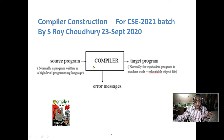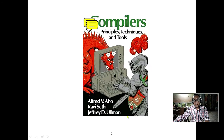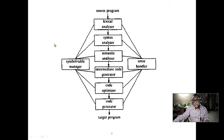We will go into the details. The main books I am covering here — the soft copy of the book is available. This is the book I am following. Everything is taken from the screen. You can see the stages of a compiler. This is the source program written in C or Java.